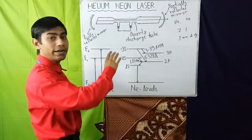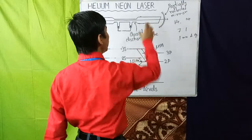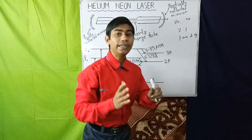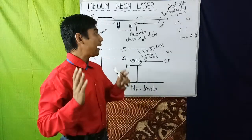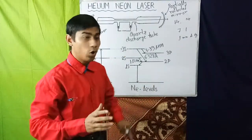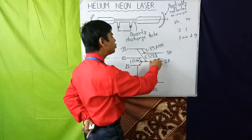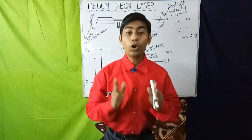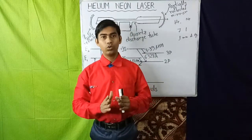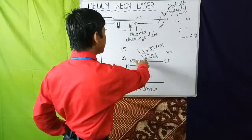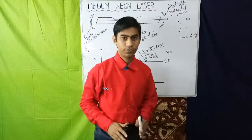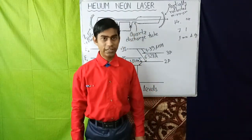Now this photon travels through the discharge tube and stimulates another excited neon atom, and another photon of wavelength 6328 angstrom will be emitted. Thus a highly intense monochromatic laser light will be emitted of wavelength 6328 angstrom from the partially reflected mirror. Thank you for watching this video.